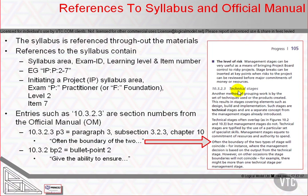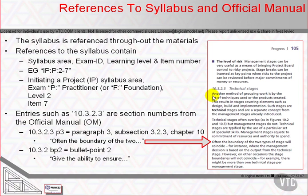If we need to look at a lower level of definition below that, then P3 or BP2 for paragraph or bullet point. So if you have a copy of the manual and you go and find 10.3.2, the second bullet point underneath it will say 'give the ability to ensure', and at 10.3.2.3 paragraph 3, we can count 1, 2, 3 to find the boundary.